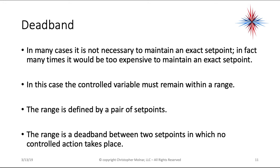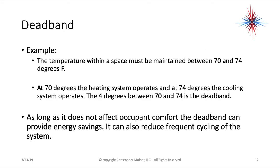Dead band is another measurement. In many cases it's not necessary — or even too expensive — to maintain an exact set point. Instead, the controlled variable must remain within a range defined by a pair of set points. The dead band is the range between two set points in which no control action takes place. For example, temperature must be maintained between 70 and 74 degrees: at 70 the heating operates, at 74 the cooling operates — the 4 degrees between them is the dead band. This reduces frequent cycling and can provide energy savings.